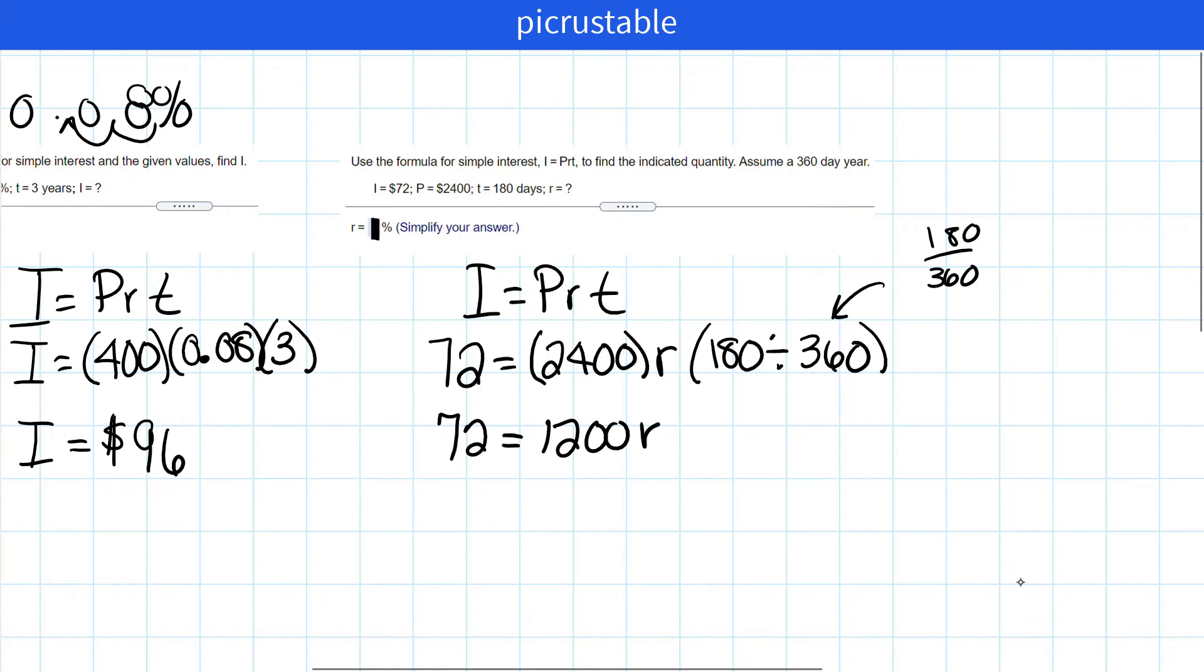Alright, we're going to divide by 1,200 to get our rate. And we end up with R equals 0.06. Now remember, we have to change that from a decimal to a percent. So we're going to move two places to the right, so we're going to end up with 6%.